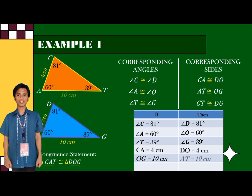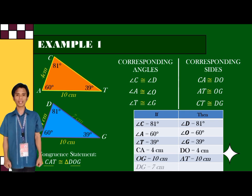If side OG is 10 cm, then side AT is also 10 cm.